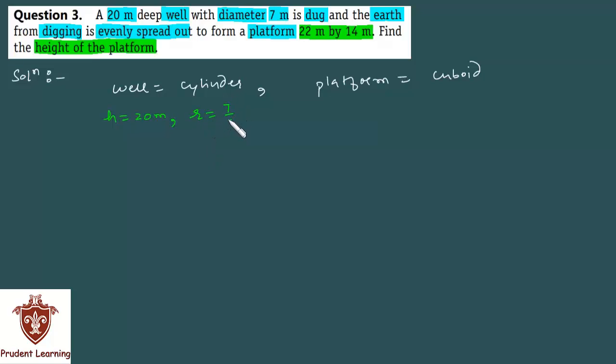That is radius of the cylinder is 7 by 2 meter. And length of the platform is 22 meter and breadth is 14 meter. And we need to find the height of the platform.